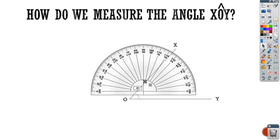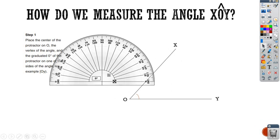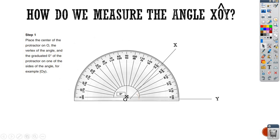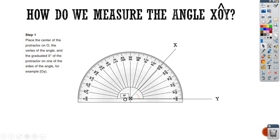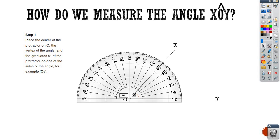First step, you have to place the center of the protractor. Here is the center of the protractor on the vertex of the angle. So here is the center of the protractor, which is on 0 degree. I place it exactly on the vertex O. And one of the sides should be on 0 degree. So here I have the center of the protractor and O, Y on 0 degree.